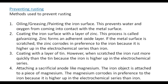We can also coat the iron surface with a layer of zinc. This process is called galvanizing. Zinc forms an adherent oxide layer. If the metal surface is scratched, the zinc erodes in preference to the iron because it is higher up in the electrochemical series than iron.